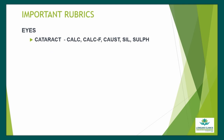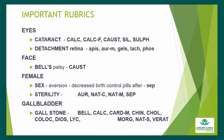Eye chapter: Cataract — drugs are Calcarea Carb, Calcarea Fluor, Causticum, Silicea, and Sulphur. Detachment of Retina — drugs are Apis, Aurum, Gelsemium, Lachesis, Phosphorus. Face chapter: Bell's Palsy — drug is Causticum. Female chapter: Sex Aversion, Decrease — after birth control pills — drug is Sepia. Sterility, Female — drugs are Aurum, Natrum Carb, Natrum Mur, Sepia.